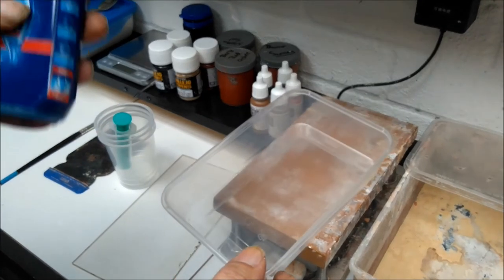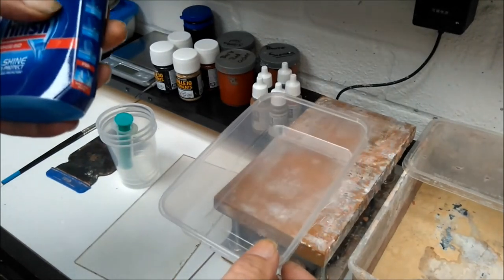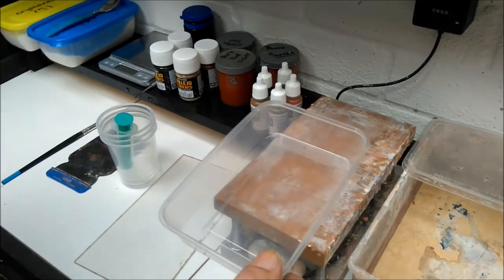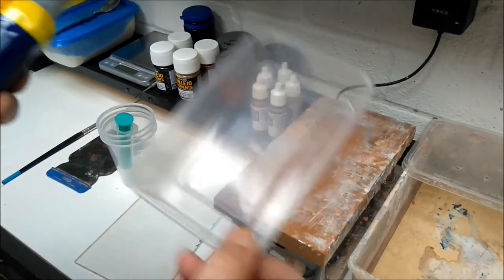The rinse aid helps release the air bubbles - it breaks the water tension in the plaster and helps release air bubbles from the face of the mold so you get decent parts.